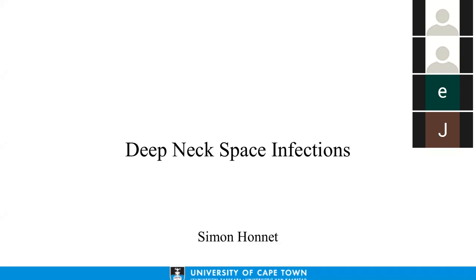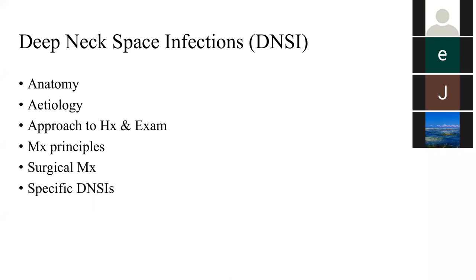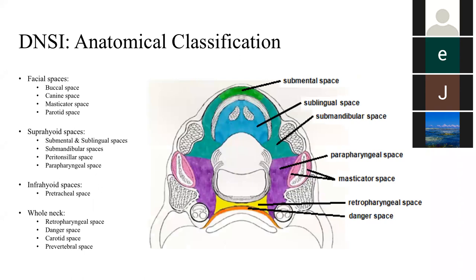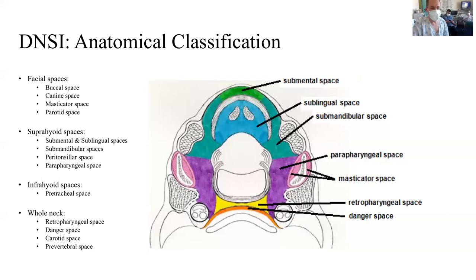This presentation covers the etiology, approach to history and examination, and commonly encountered deep neck space infections. The deep neck spaces are classified anatomically into facial spaces — buccal, canine, masticator, and parotid — then suprahyoid and infrahyoid spaces, and spaces that traverse the whole length of the neck from the base of skull to the mediastinum. The most commonly encountered spaces are those indicated in the picture, though there is a very long list.